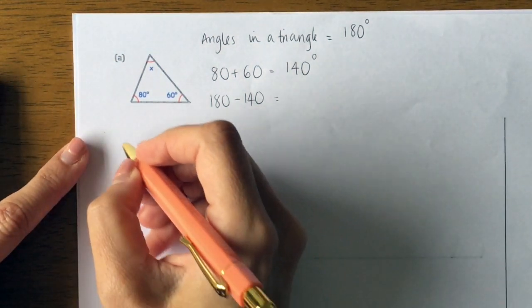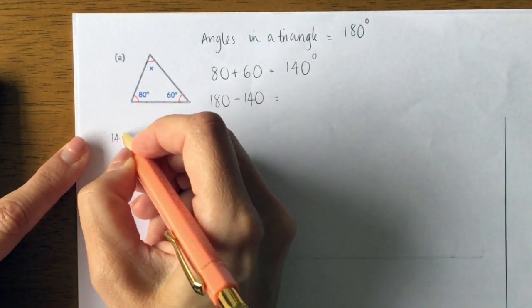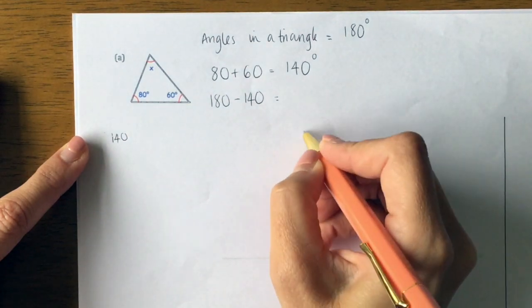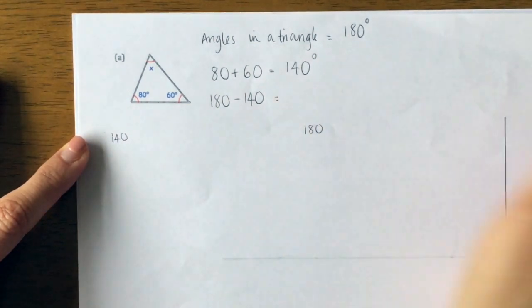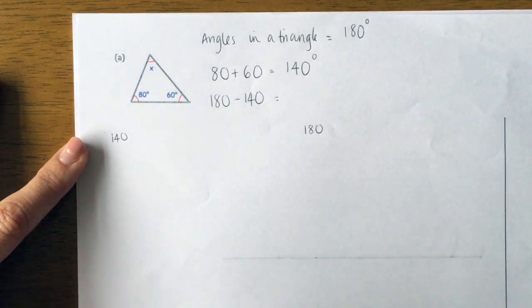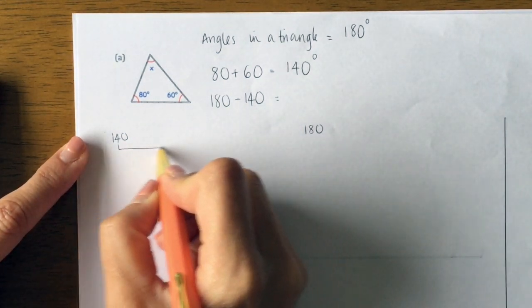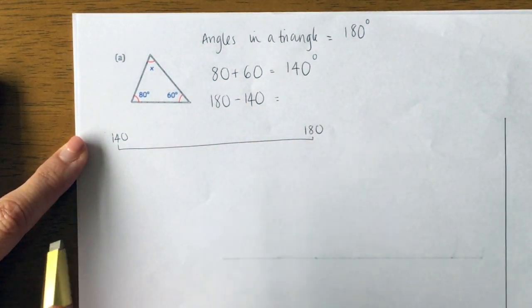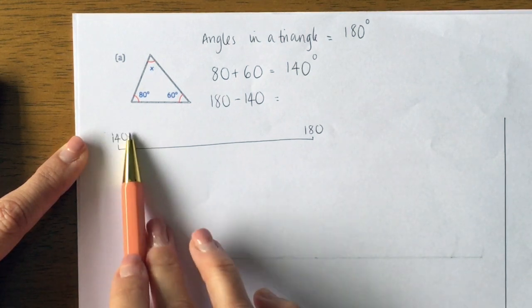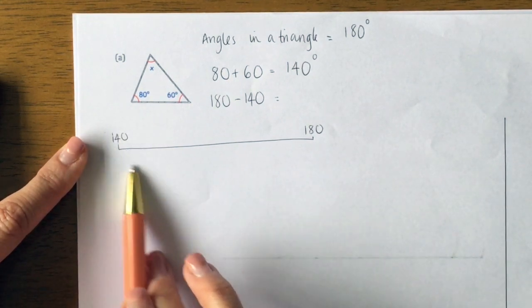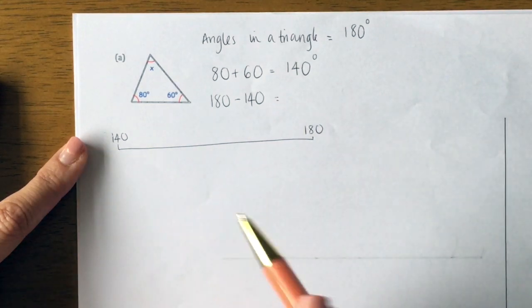So I start on 140 and I want to get to 180. I've got to figure out the little jumps that I need to make. It's nice and easy this one because we've got a whole number here already—we haven't got to get to the next 10. So I've got 140, and then I'm gonna go up in tens: 150, 160, 170, 180.